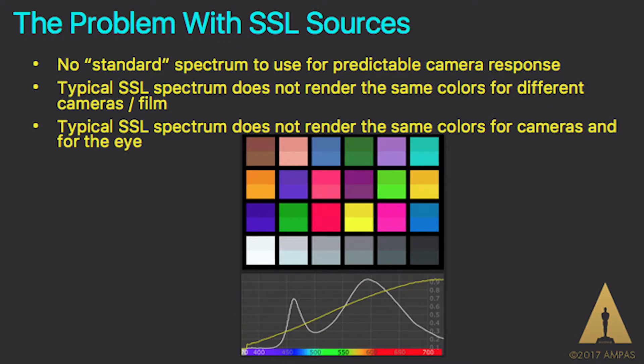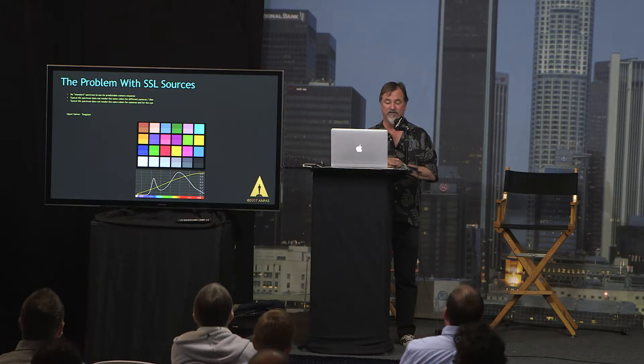What we determined a few years ago is that there were no standard spectrum to use for predictable camera response. A typical solid state lighting spectrum does not render the same colors for different cameras or film, and does not render the same colors for cameras and for the eye. If you are shining a light on a human face and the light is deficient in a color, you can't expect to see any return of that color to the camera. There is something recognizably wrong about flesh tones if you don't supply them with the kind of quality of color we're used to seeing.